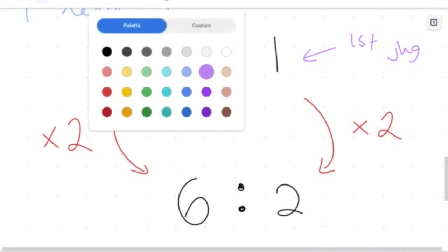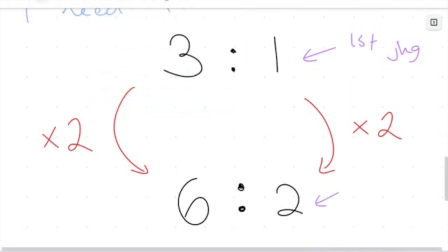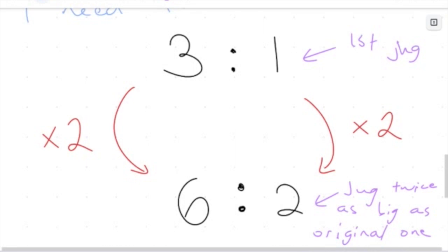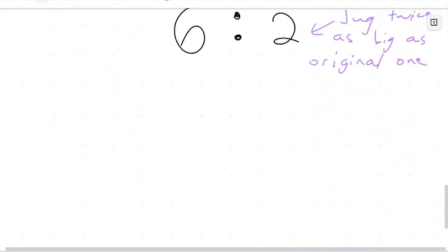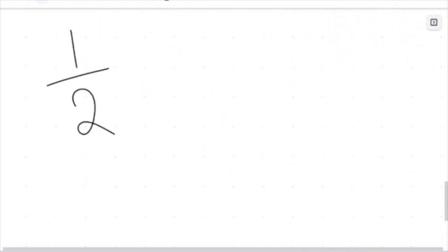This is what we call an equivalent ratio — we've produced a ratio for a jug twice as big as the original. This idea comes from something we've seen before in fractions. Think back to equivalent fractions.